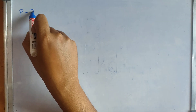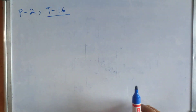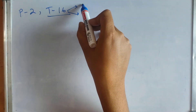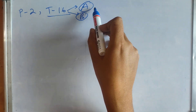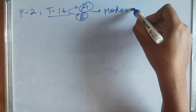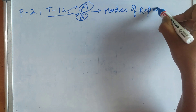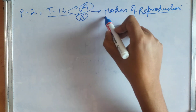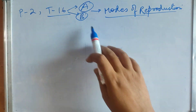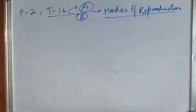Hello everyone, hope you all are doing well. Today we are going to do topic 16 of paper 2 — topic 16, which is modes of reproduction. We will divide it into two subtopics: 16a and 16b. Today we are going to do 16a, that is modes of reproduction. In the next session we will do 16b with the remaining topics of this session.